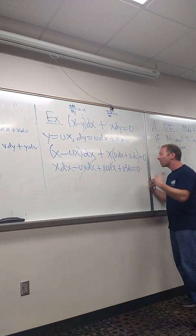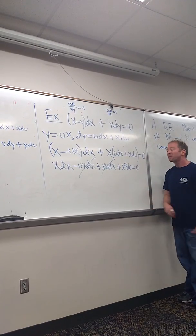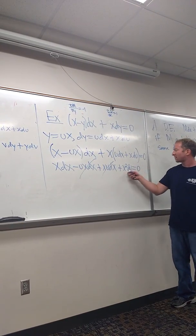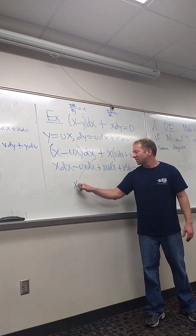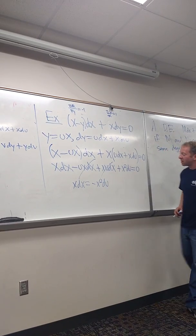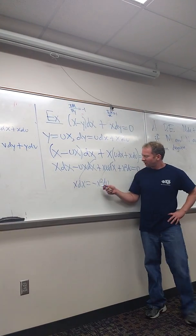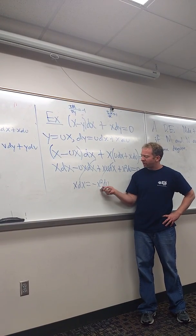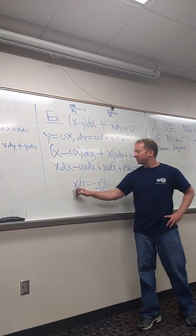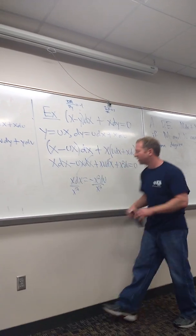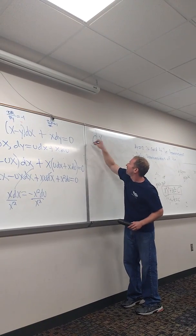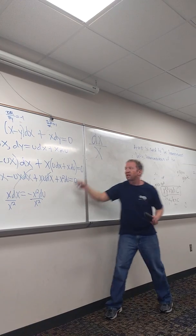Expect a wreck on these — expect to get them wrong sometimes, it's okay, partial credit. Don't forget to be doing the homework. This is separable, so maybe just subtract the x squared du. So x dx equals negative x squared du. It looks like we have too many x's here — we divide by x squared.